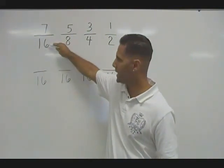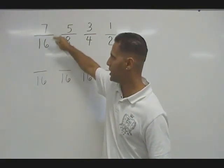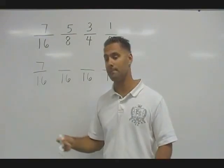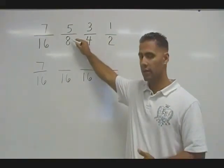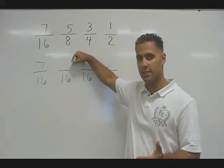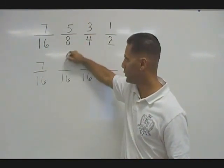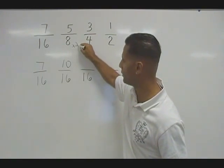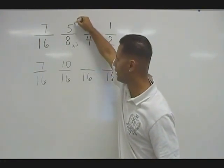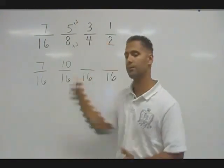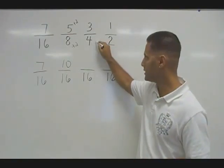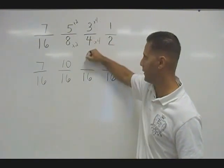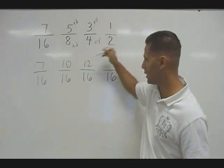So we're going to change all of our units or denominators into sixteenths. Now notice with this fraction, we did not change 16, so we're not going to change the numerator either — we keep seven as seven. With this denominator, it would take two eights to make 16, so we have to take two of these, giving us a total of 10. Because the eight got two times bigger, we increase the numerator by a multiple of two as well. And with this four, it would take four of these to produce 16, so we take four threes, giving us a numerator of 12.